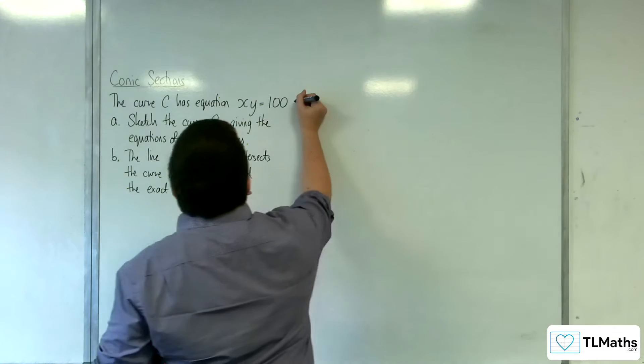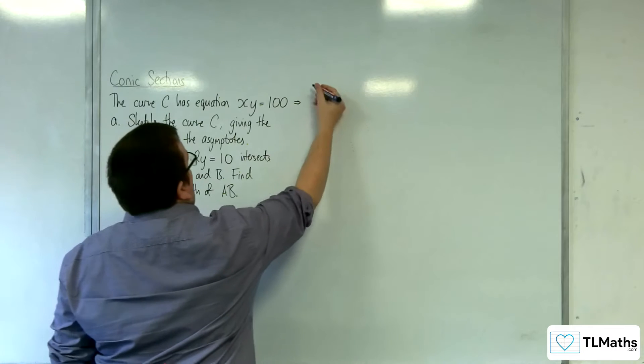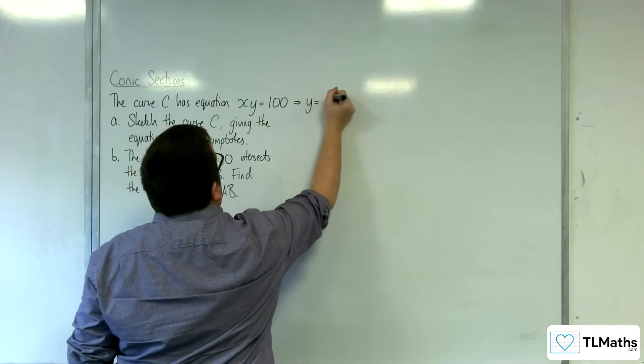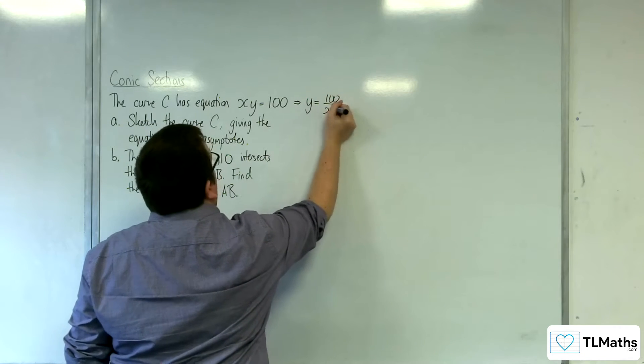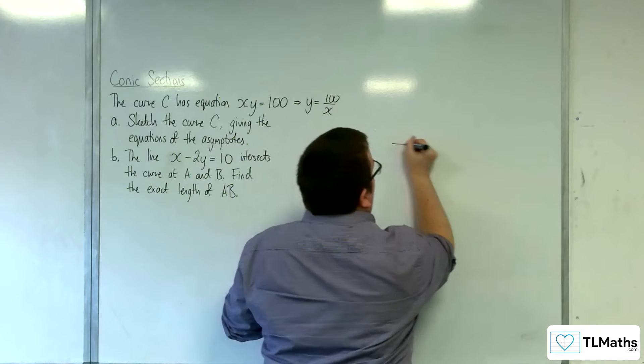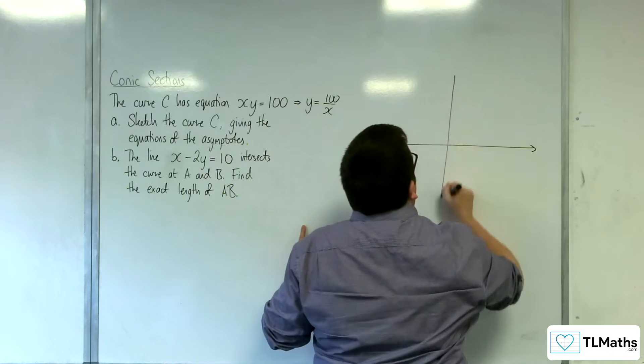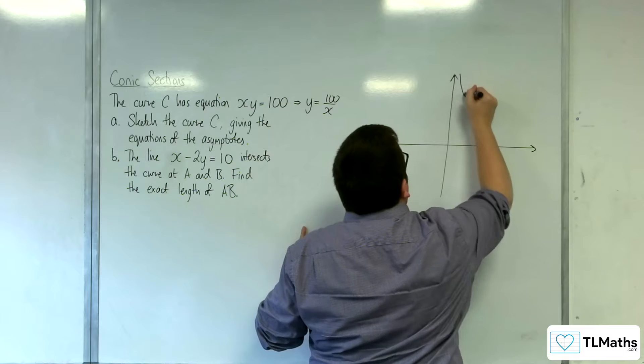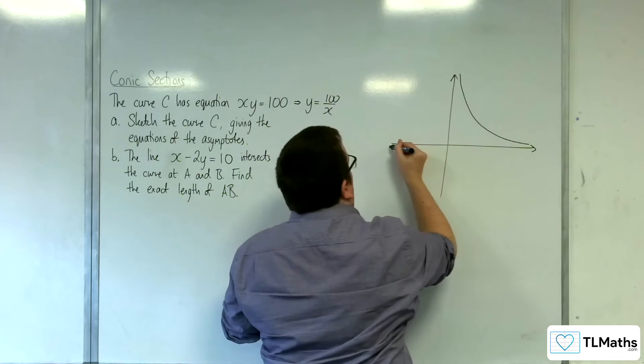The first thing you need to recognize is that xy equals 100 is just y equals 100 over x. This is a bog standard rectangular hyperbola that will look like this.